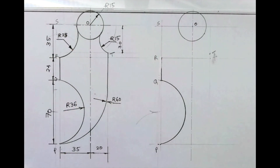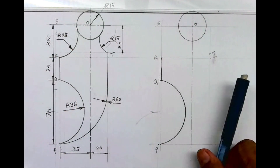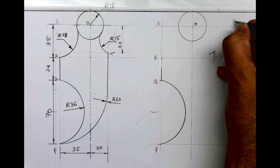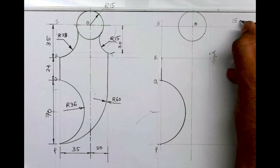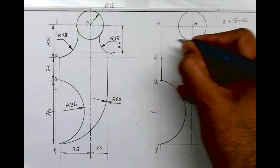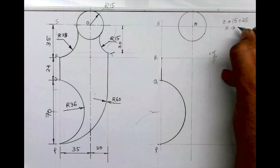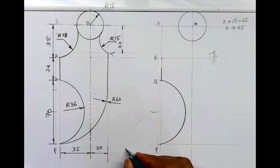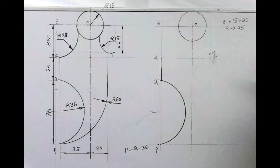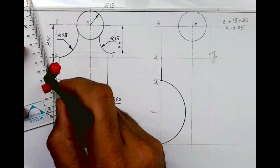After that we have radius 25. From the center I should cut 15 plus 25. From O I will cut 15 plus 25, and from R I will cut 25 directly. From P we cut 36 and from Q also we cut 36 — wherever they meet, from that point we can draw that radius.